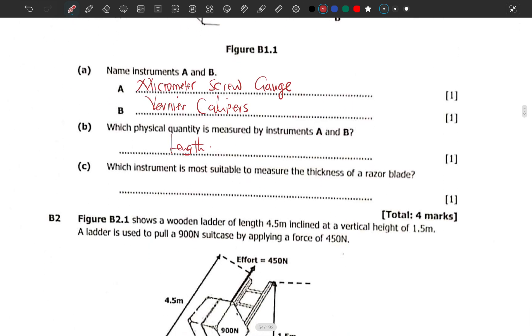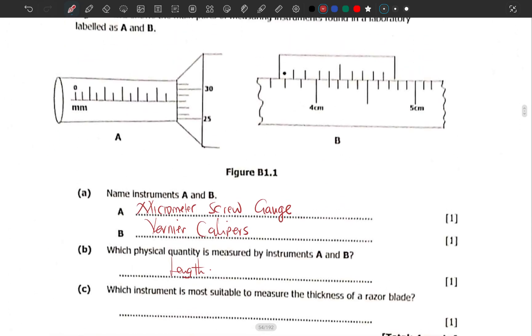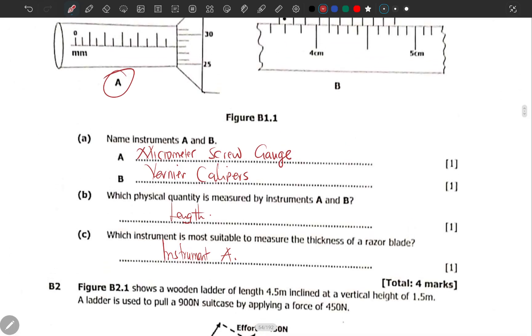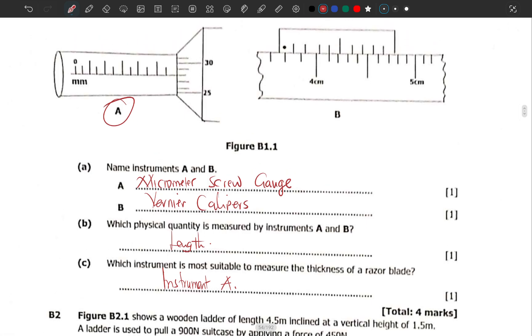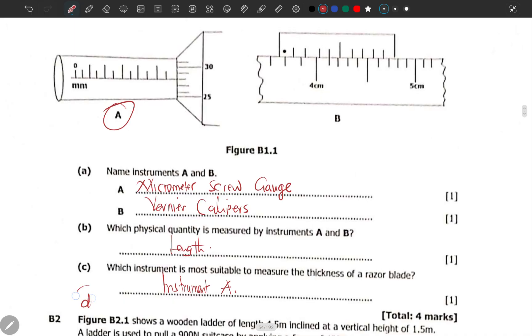Which instrument is most suitable to measure the thickness of a razor blade? A razor blade is quite thin, and looking at the two instruments, the one which is most appropriate for use is the micrometer, because micro means small. We use instrument A. That's all they didn't say name the instrument, they said which instrument. Since they are labeled, we say instrument A.